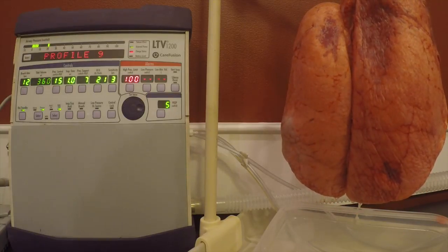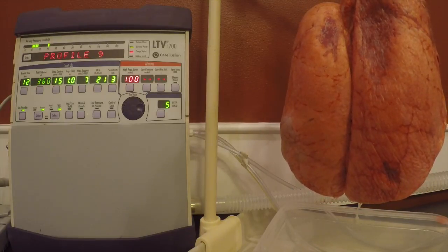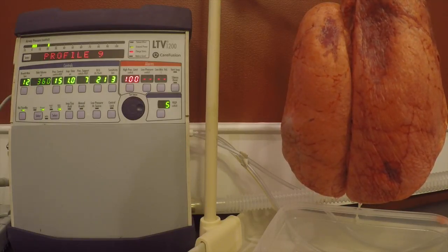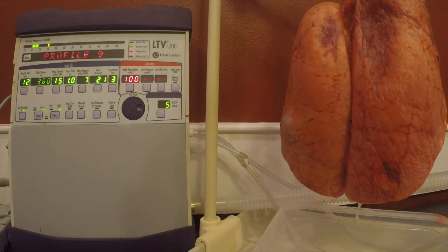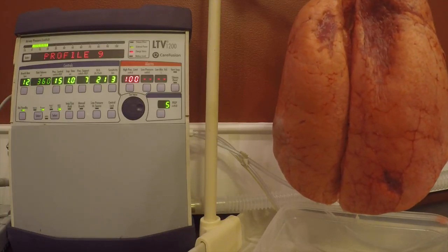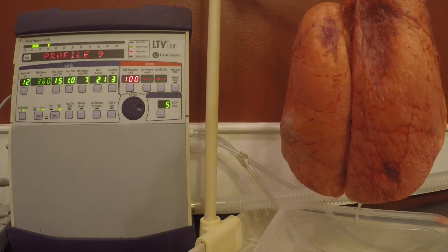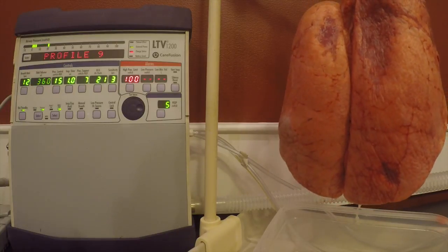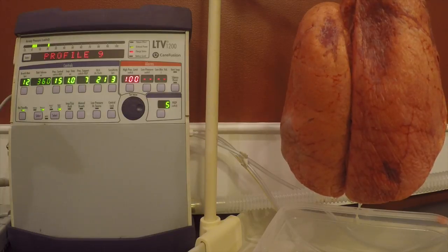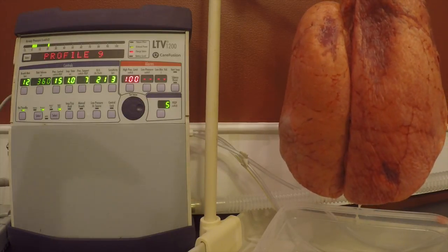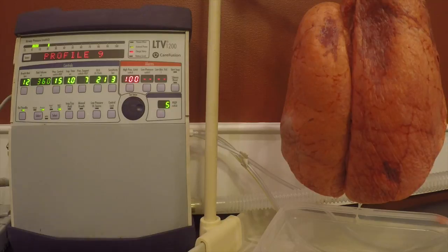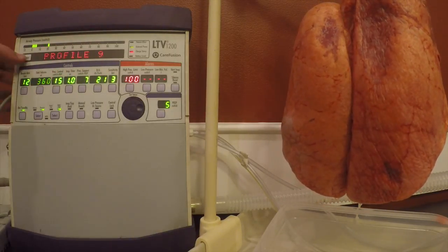When will we use a rise time profile of nine versus profile one? A rise time profile of one would be for somebody that is very hypoxic and air starved. They may have higher PIPs, so think of this as somebody that needs a lot of PEEP. You would use profile one in a CPAP patient. A rise time profile of nine delivers that breath over a longer period of time—nine tenths of a second. Profile one is delivered over a tenth of a second. Every rise time profile corresponds to that number in tenths of a second.